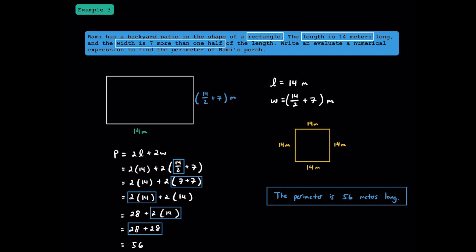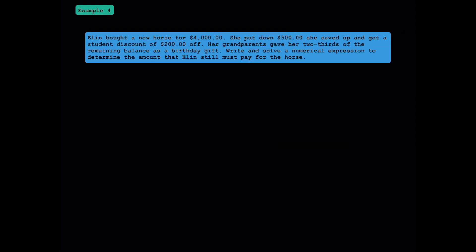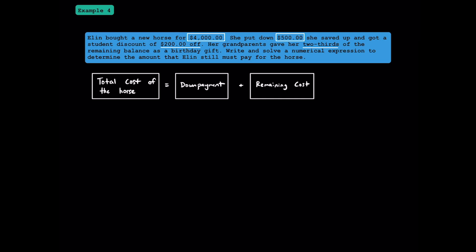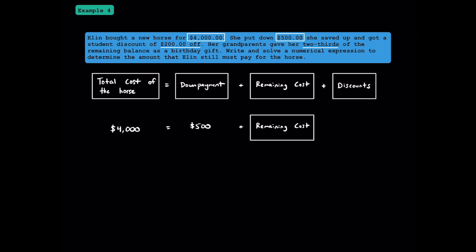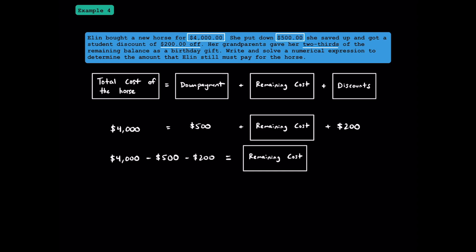It turns out the patio is actually a square, which still makes sense because all squares are rectangles. Now let's try example 4. Give the video a pause to read the question, and unpause when you're ready. The total cost of the new horse was $4,000. She already paid $500, got a $200 student discount, and her grandparents gave her two-thirds of the remaining balance as a birthday gift. The verbal model: total cost equals down payment plus remaining cost plus discounts. Since her grandparents pay two-thirds, Eileen pays one-third. We write one-third times the quantity of $4,000 minus $500 minus $200.